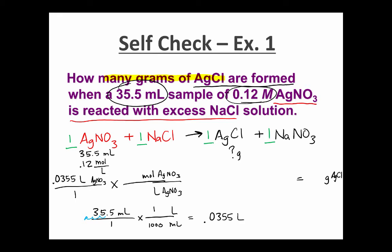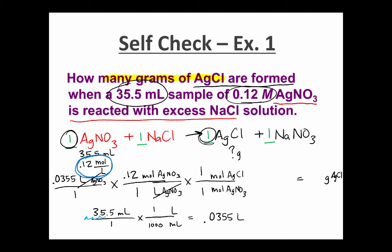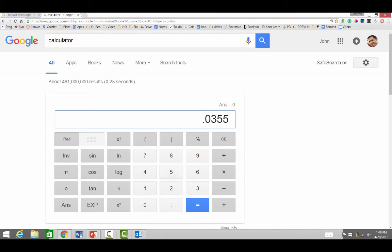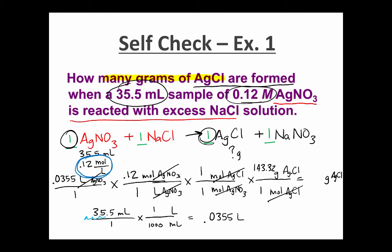So how do we convert liters to moles? We put in the molarity as our conversion factor — this solution is 0.12 moles for every 1 liter. Next, we put in the mole-to-mole ratio, which is 1 to 1. And lastly, since we're looking for grams of AgCl, we convert moles of AgCl to grams using silver chloride's molar mass. Multiplying 0.0355 times 0.12 times 143.32 gives 0.6105, which we round to two significant digits: 0.61 grams AgCl.